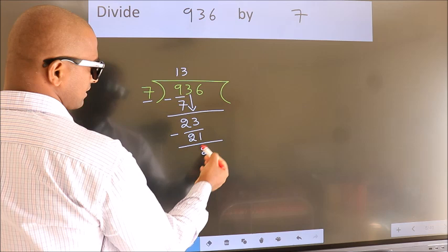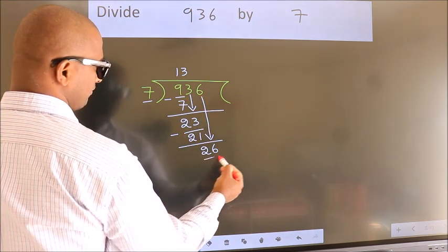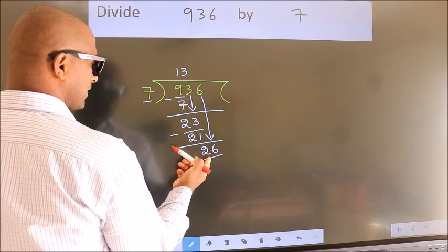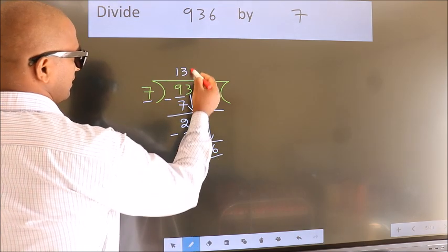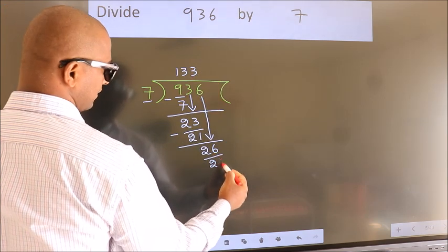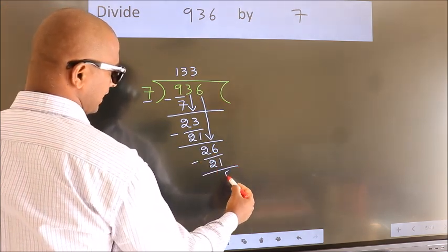After this, bring down the beside number. So 6 down. So 26. A number close to 26 in the 7 table is 7 times 3 equals 21. Now we subtract. We get 5.